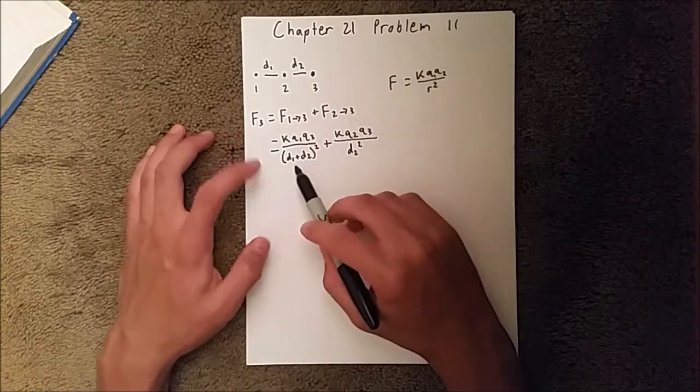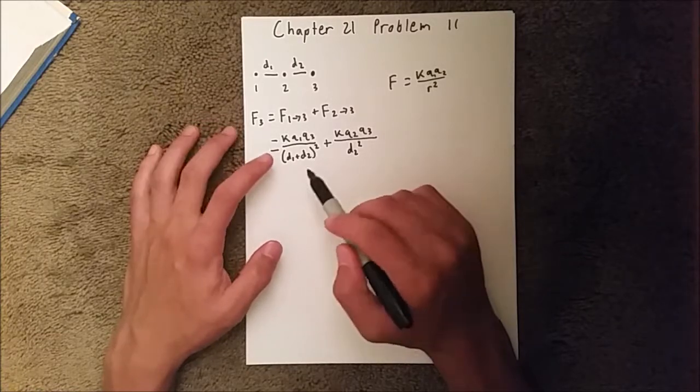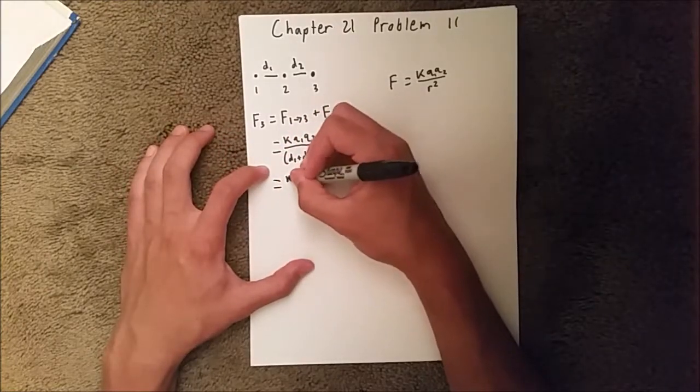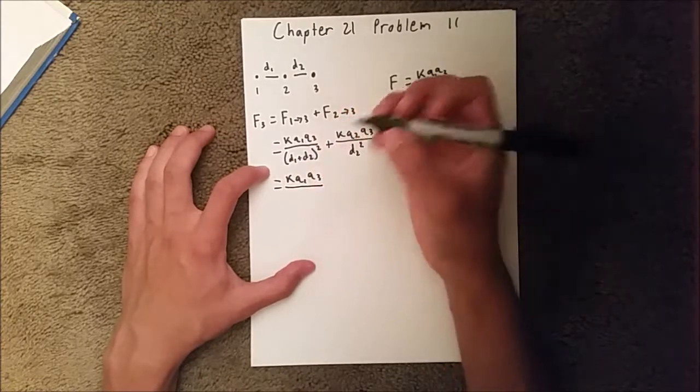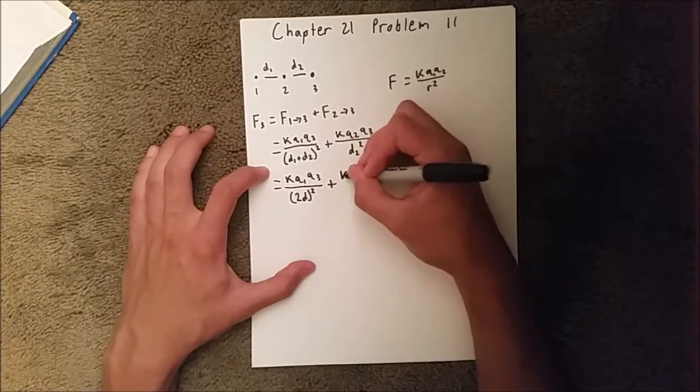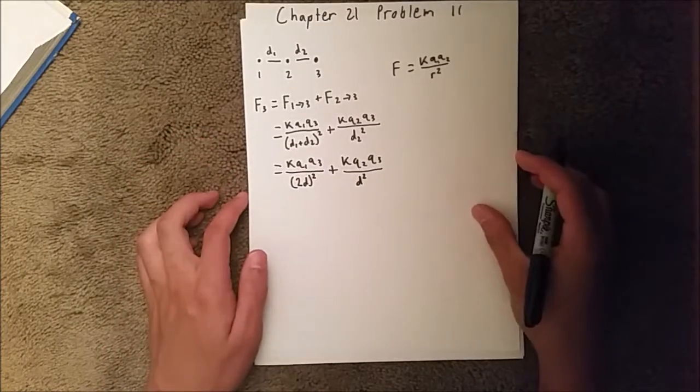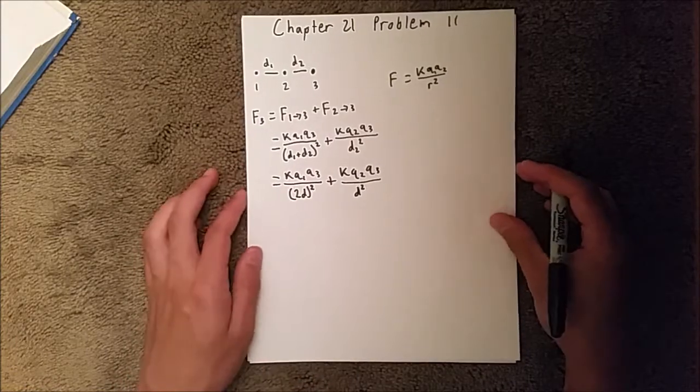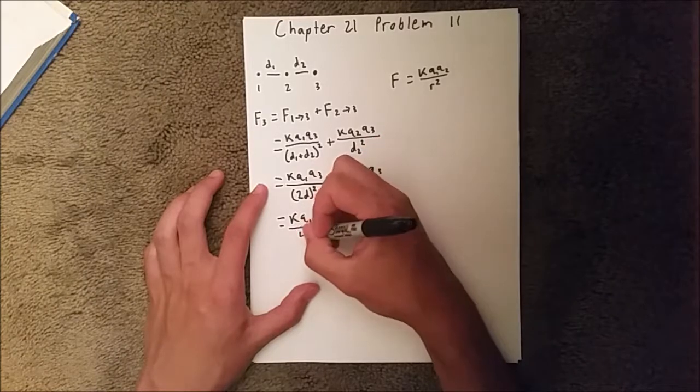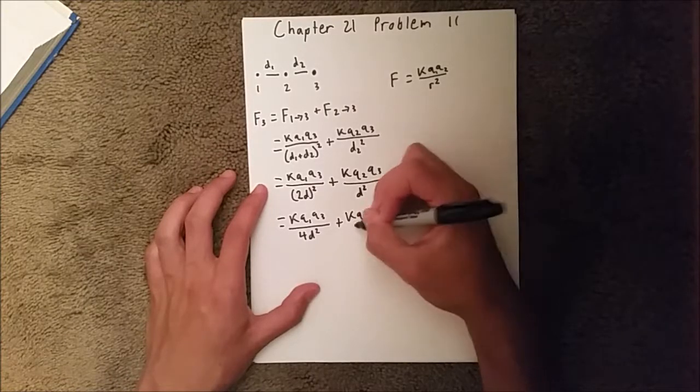Now, if you look here, normally you have to square this whole thing. But because we're told in the problem that distance 1 and distance 2 are equal, we can actually further simplify this by saying kq1q3 over 2 distance squared plus kq2q3 over distance squared. You've got to make sure you square this 2 here as well. So when you do that, you'll get kq1q3 over 4d squared plus kq2q3 over d squared.